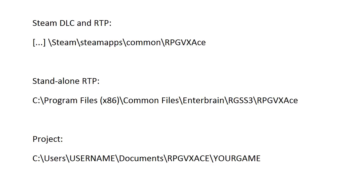First of all, you want to find where stuff is installed. There are three things you want to know: where your DLC or resource packs are — they're just called DLC because it's Steam, normally you wouldn't call it that on any other site — then there's the RTP, which is the Runtime Package, that's the default graphics that come installed. And then there's your actual project file. Every game you create with RPG Maker has a separate folder, so you actually have to import your tile sets into each project if you want to use them.